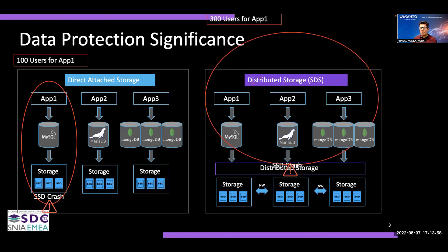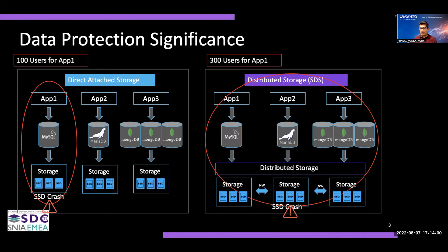This problem becomes even more pronounced in the case of distributed storage. Here, instead of 100 users, the distributed storage supports several different applications. Imagine applications 1, 2, and 3 with 300 users connected. All 300 users have to be redirected to DR instances to maintain quality of service during the outage.